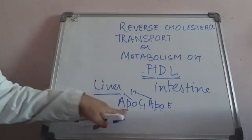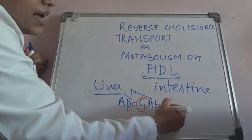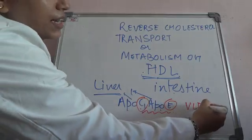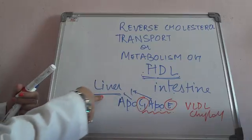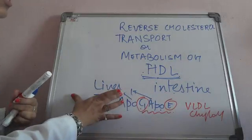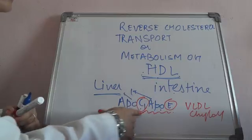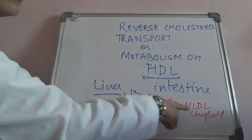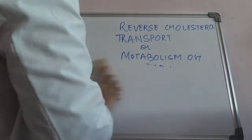What will this ApoC and ApoE do? When we further discuss the metabolisms, ApoC and ApoE are required for the metabolism of VLDL and chylomicron. So basically HDL is synthesized by liver and intestine, ApoC and ApoE are synthesized by liver, and this final HDL which is synthesized by both of them together — which has ApoC and ApoE — this ApoC and ApoE will be donated for the metabolism of VLDL and chylomicron.